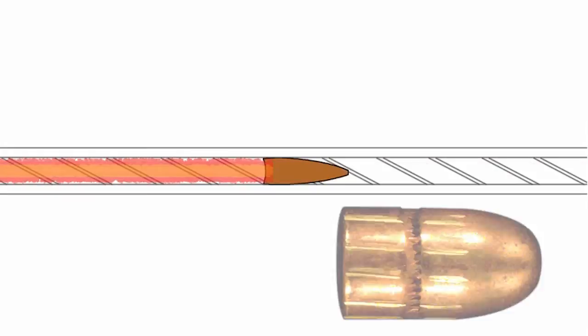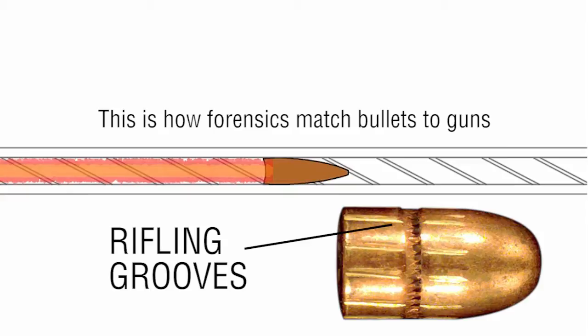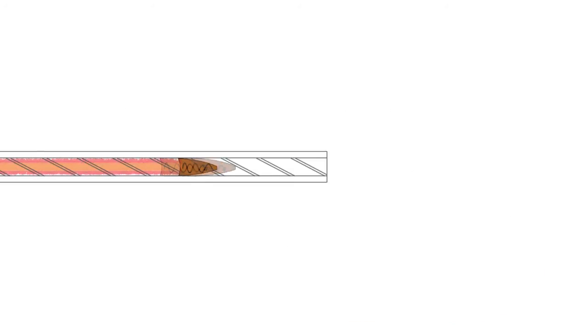The bullet, with its softer copper or lead exterior, is then forced to grip into the rifling grooves of the harder barrel. As the bullet travels down the barrel, it continues to spin along the grooves until it exits the barrel.